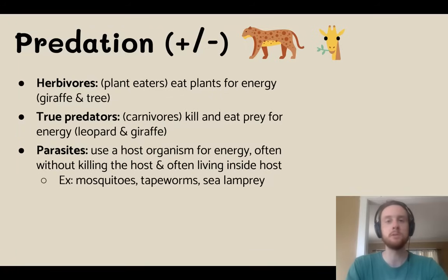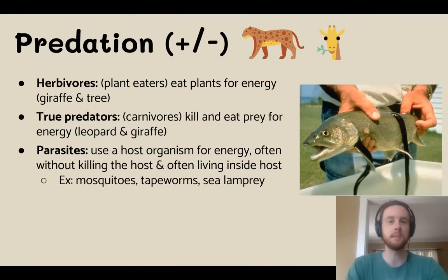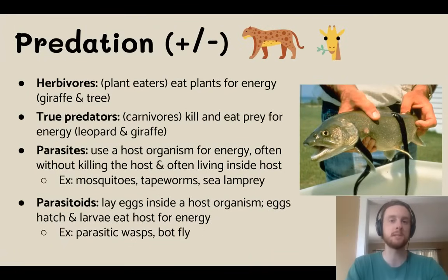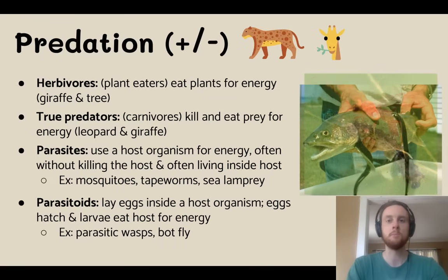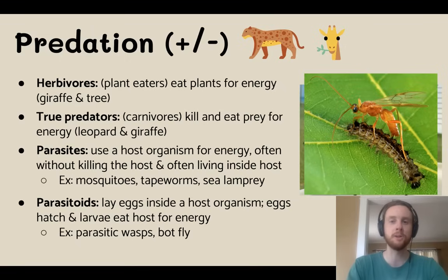Then we have a parasite. A parasite is still going to use another organism for energy, but it's usually much smaller than what we call the host organism — the organism it often lives inside of or attaches to the outside of. Oftentimes the parasite can draw energy from the host without killing it. An example is the sea lamprey, an eel-like organism that attaches to a fish and draws out its blood. We also have mosquitoes or tapeworms. Then we have a parasitoid — a very specific type of parasite that lays its eggs inside the host organism. When the eggs hatch, the larvae eat their way out, often killing the host. An example is a parasitic wasp that injects its eggs into a caterpillar.